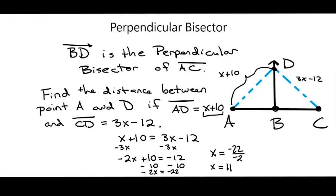Well, I need to find the distance between point A and point D, not just the value of x. And remember that AD is x plus 10. So I will put the value of x, which is 11, into that expression. So it will be 11 plus 10, and that equals 21.